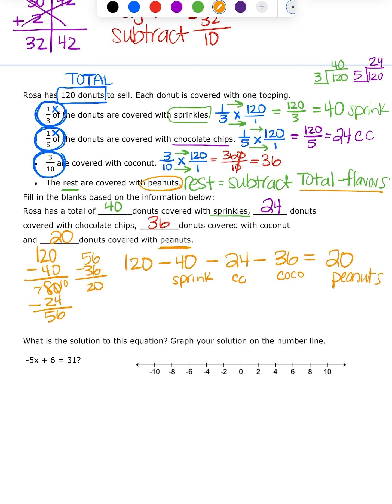That's how we use fractions to find the pieces of the total. Remember: top times top, bottom times bottom when multiplying fractions. The total goes over one because it's a whole number.